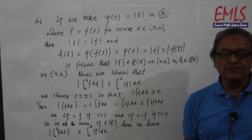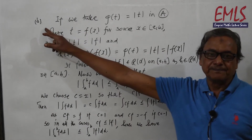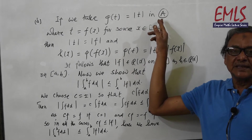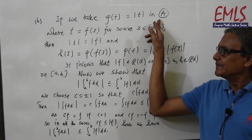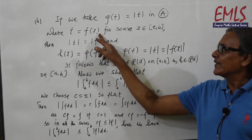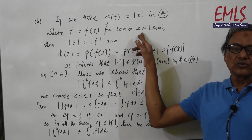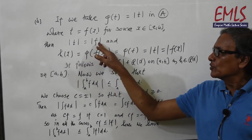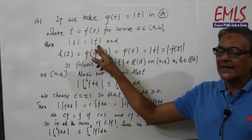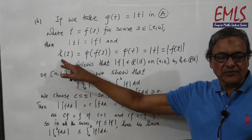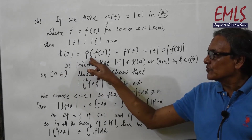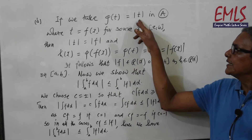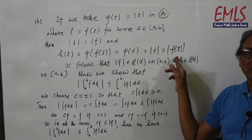Now we prove part (b). If we take φ(t) = |t| in statement A, where t = f(x) for some x in [a, b], then h(x) = φ(f(x)) = φ(t) = |t| = |f(x)|.